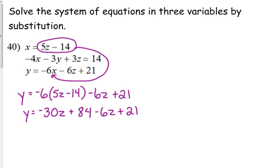negative 30z plus 84 minus 6z plus 21. And I'll go ahead and tell you, I don't always do my arithmetic 100% correct. So if you're doing it in your calculator and I make a mistake, please let me know before I keep rolling with it. Combine the z's. So we've got negative 36z. And when we combine the constants, that gives us 105.